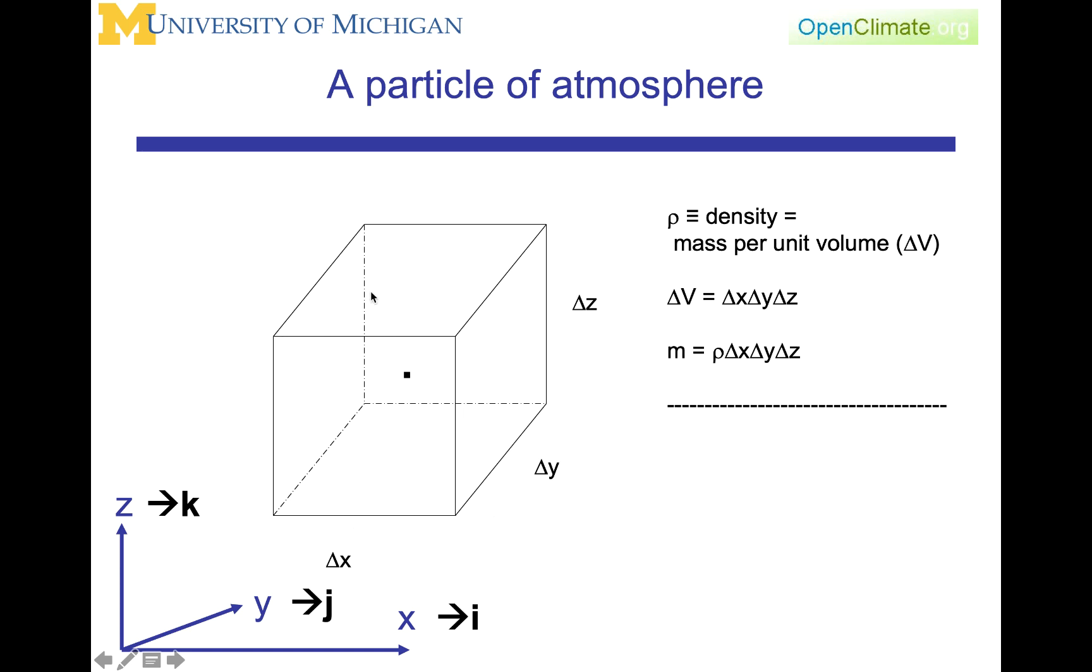We will assume that within this parcel there is a density, rho, which is mass per unit volume. The volume will be simply delta x times delta y times delta z, again a very intuitive way to think about the volume of a parcel in three dimensions. Therefore, the mass of the parcel will be rho delta x delta y delta z, since rho is mass per unit volume. Here is the volume and here is the mass.